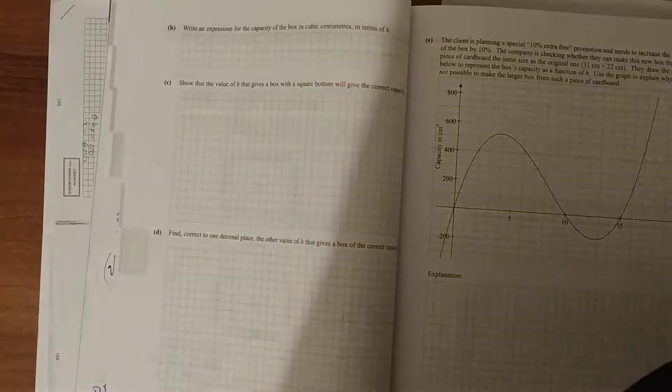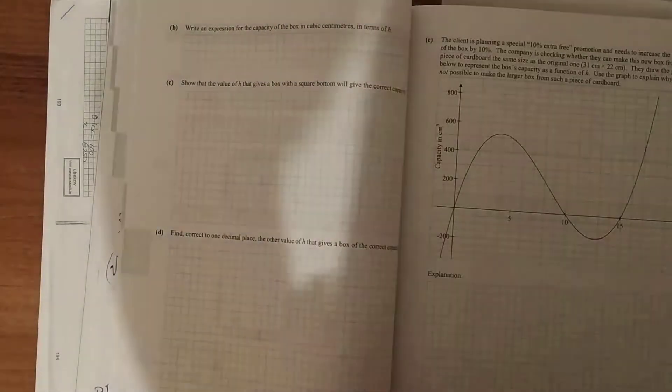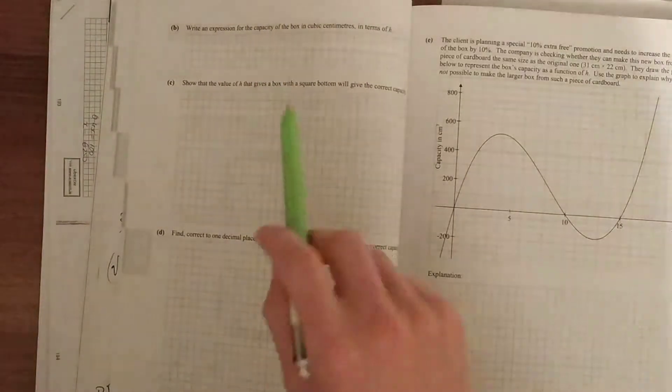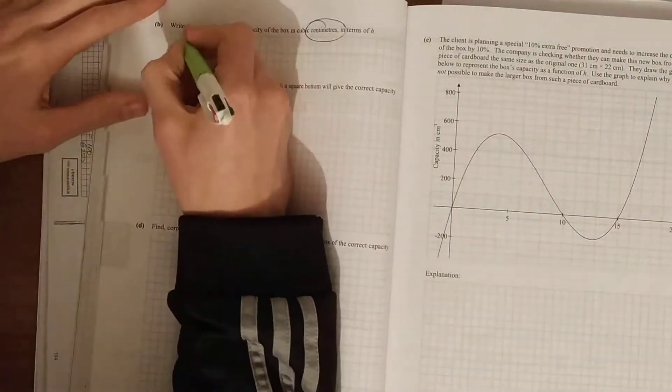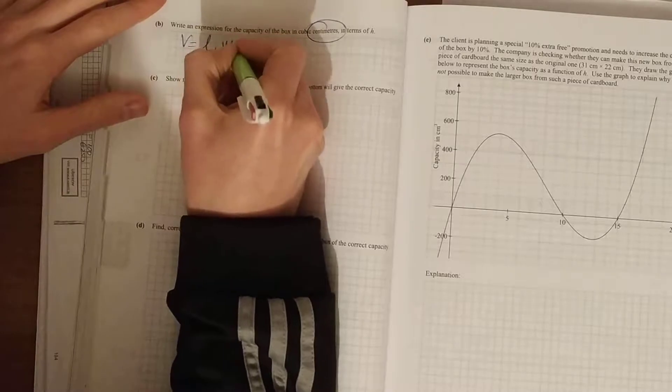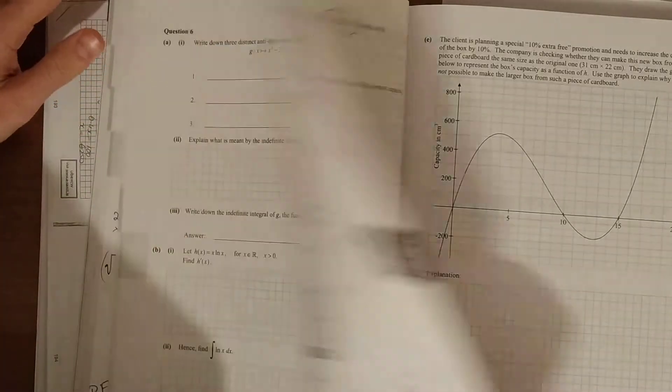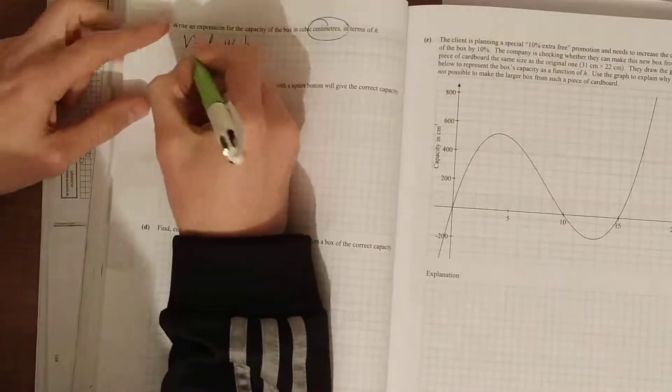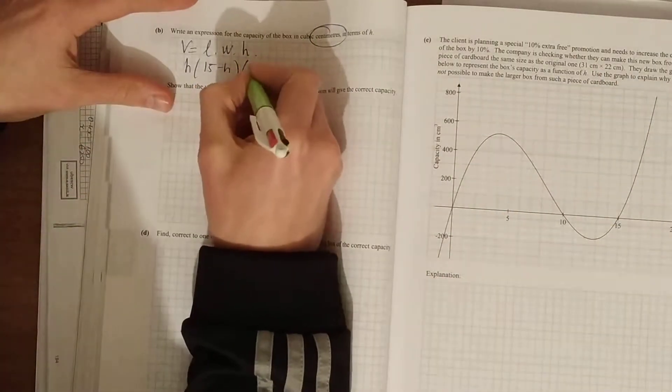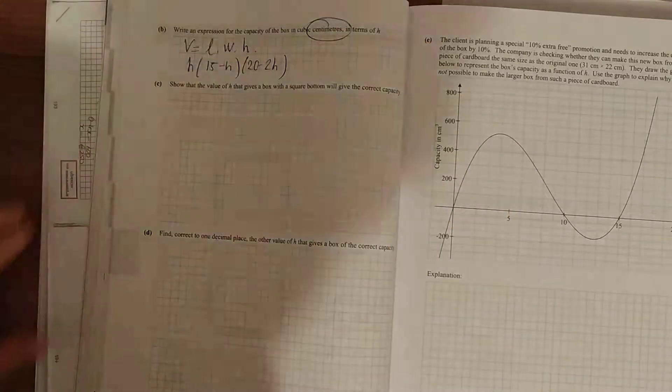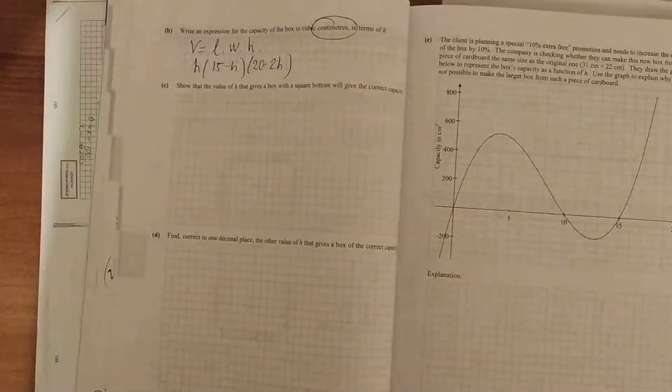Next page, write an expression for the capacity of the box in cubic centimeters in terms of h. So volume is length times width times height. So h times 15 minus h times 20 minus 2h - just the answers to your previous part.